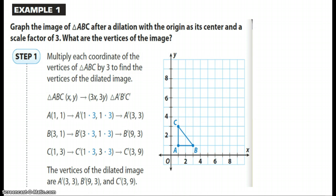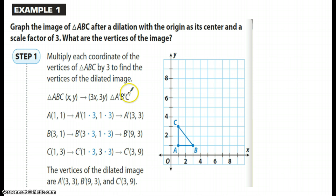The author gave us this example to look at before we do some guided practice and individual work. We have triangle ABC and he wants us to graph the image of triangle ABC after a dilation with the origin as its center and a scale factor of 3. This is the original or pre-image, and we are going to find A prime, B prime, and C prime. With a scale factor of 3, we multiply 3 times each particular vertex.